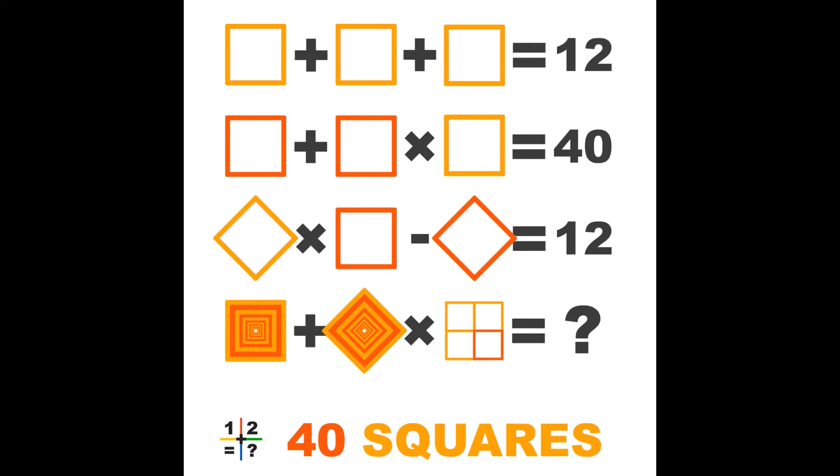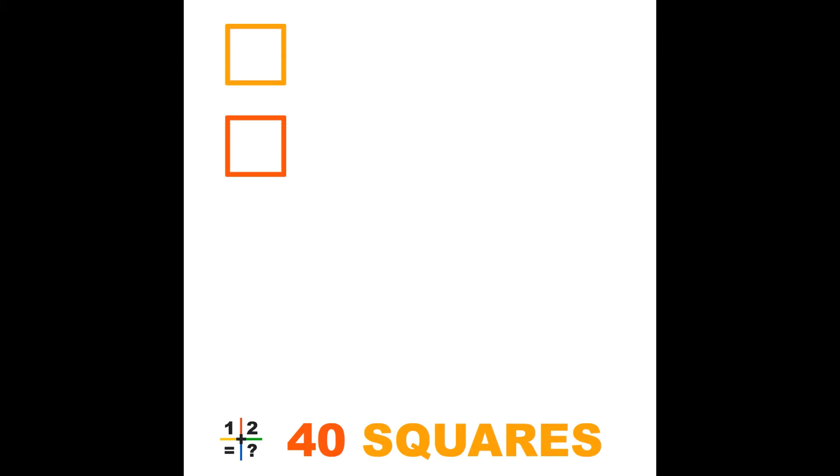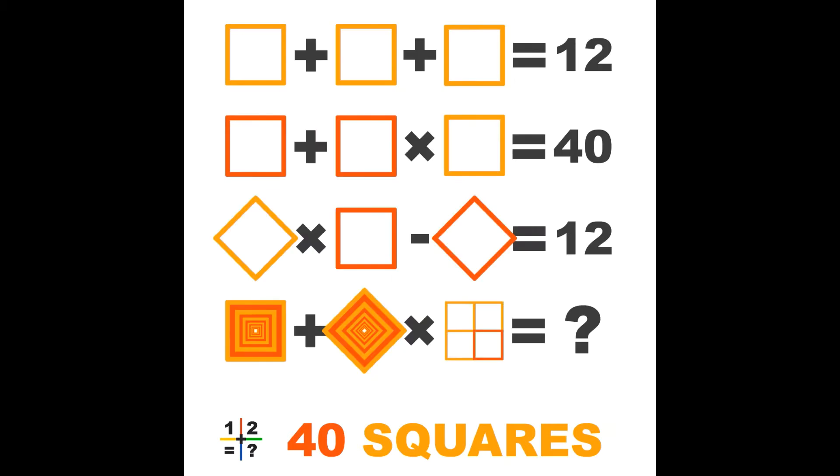Four lines, but only two objects: a yellow square and an orange square. What we also see is that the squares stand in different positions, and in the last line they are combined. Finally, we have the strange title 40 Squares, whatever that may mean we will find out later.